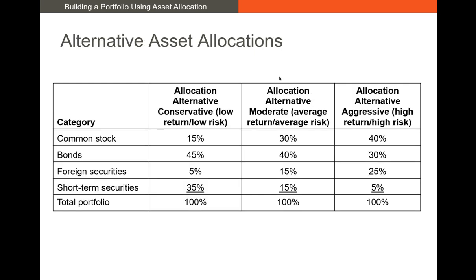What do some alternative asset allocations actually look like? Here we have three examples: a low risk, an average risk, and a high risk portfolio. In the low risk portfolio, we typically have a lower percentage in common stock, a higher percentage in bonds, and a higher percentage in short-term securities like money market mutual funds. In the high risk portfolio, we have a higher concentration in stocks and other foreign securities. Asset classes like public equity, private equity, hedge funds, futures, and options are our high risk assets, while bonds and liquid assets are typically our low risk assets.